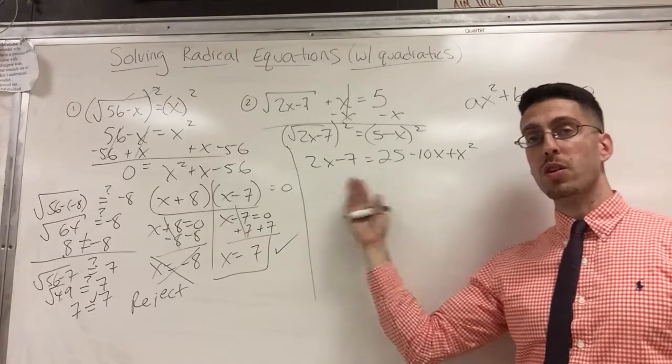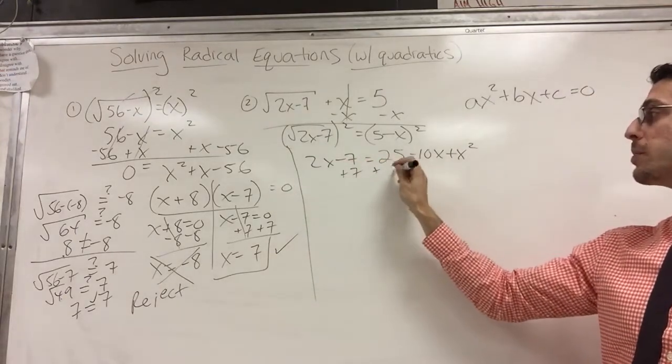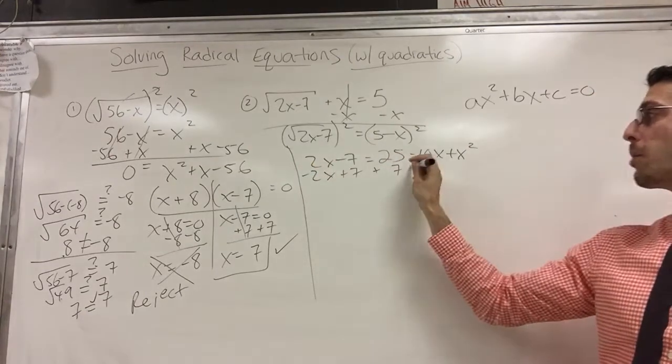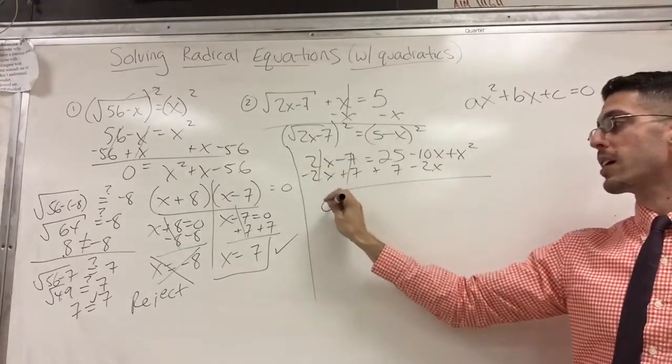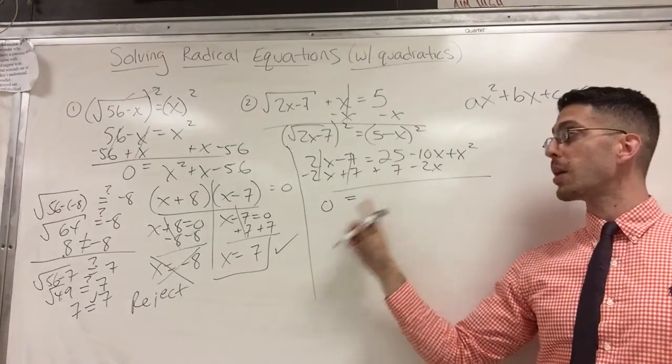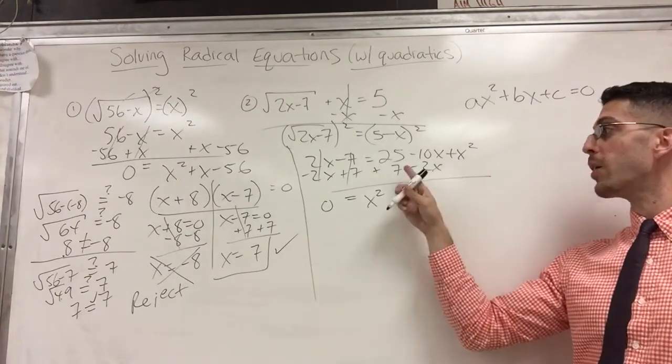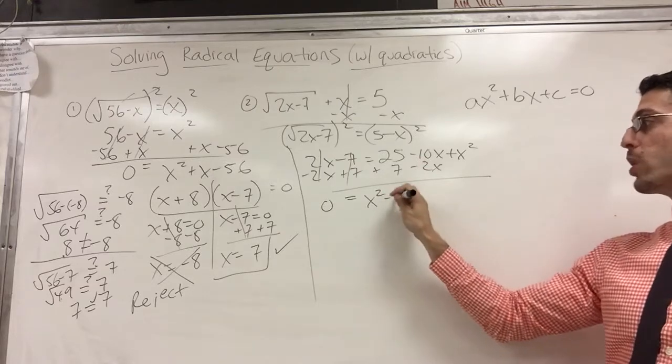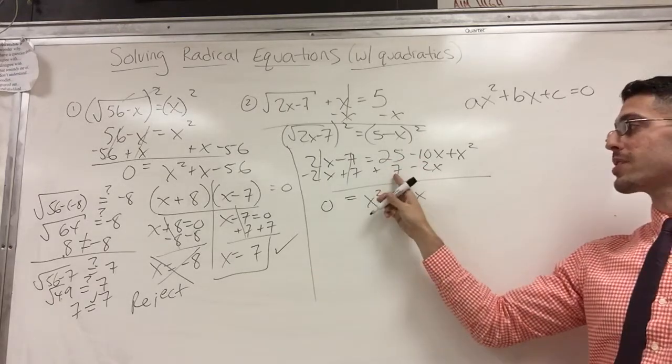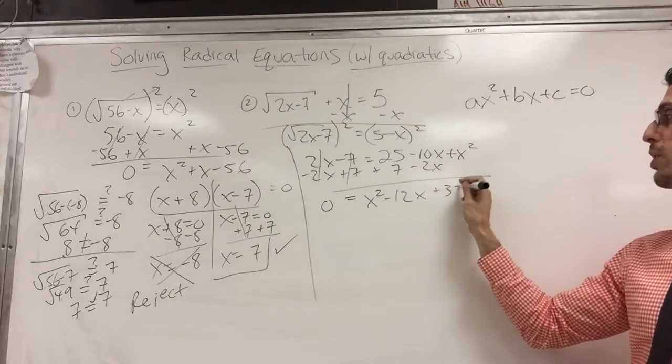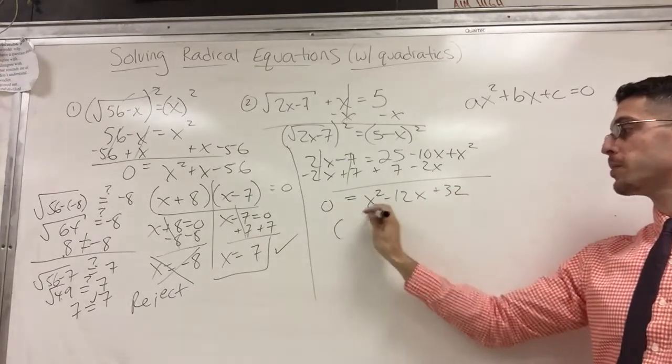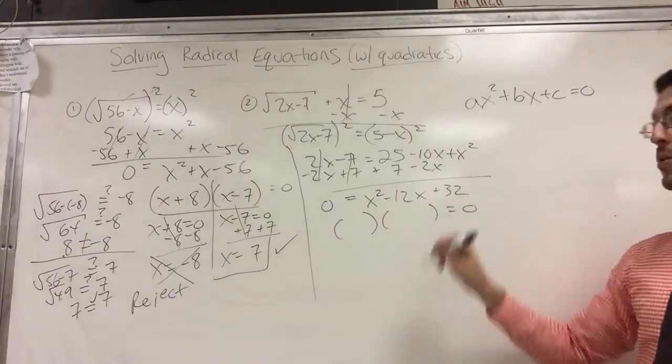So this is messy, but I'm going to bring all my like terms to the one side, like I did over there. Plus 7, plus 7, minus 2x, minus 2x. So now this is gone, this is gone. I got 0 on the left side, and I'm going to try to get this in standard form. It's another quadratic. So x squared I'm going to write first. So I took care of this. Now, minus 10 and minus 2 is negative 12x, and 25 plus 7 is 32, positive 32.